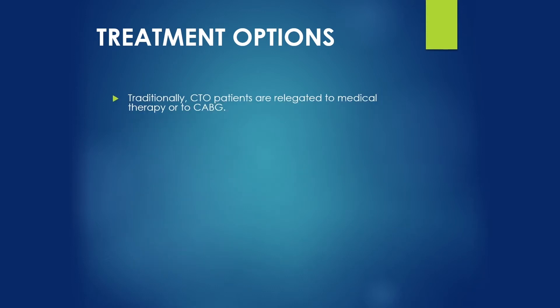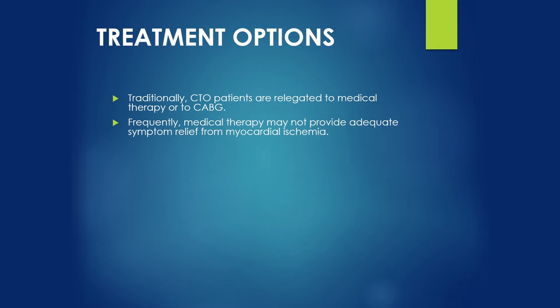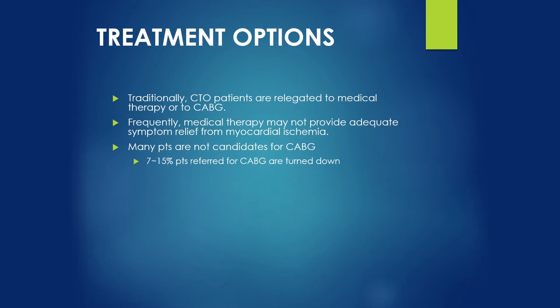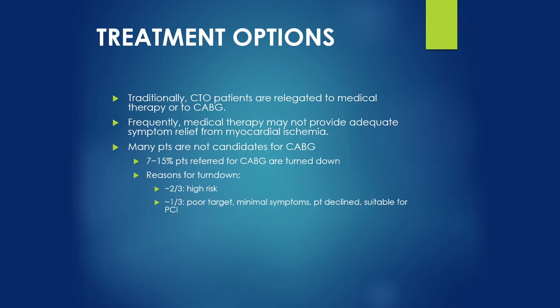Traditionally, CTO patients are relegated to medical therapy or to coronary artery bypass grafting. Frequently, medical therapy may not be sufficient and may not provide adequate symptom relief from myocardial ischemia. Many patients are not considered a candidate for coronary artery bypass grafting for various reasons. In fact, 70% to 75% of patients referred for CABG are turned down. Reasons include two-thirds high risk, one-third poor targets, minimal symptoms, patient does not want surgery, or patient may be a suitable candidate for PCI. Ten to fifteen percent of prior CABG patients require revascularization within 10 years after the initial procedure.